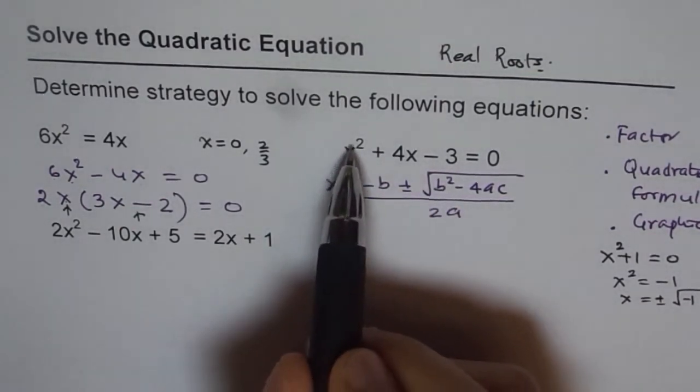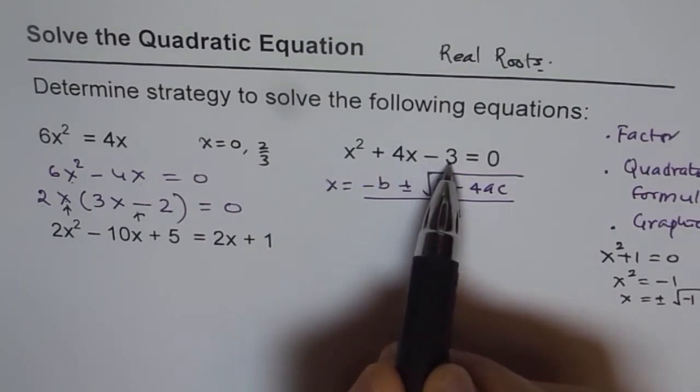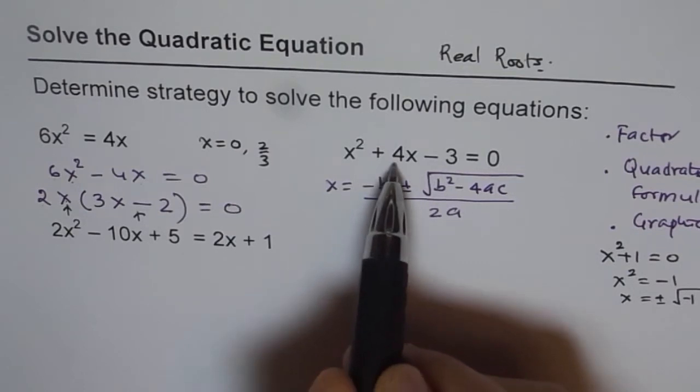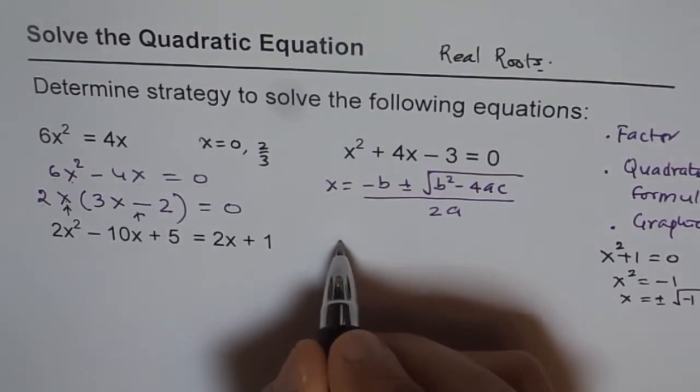Now, a is the coefficient of x², b is the coefficient of x, and c is the constant term, which is -3 in this case. And b is +4, a is 1. So we substitute all these values here to evaluate.